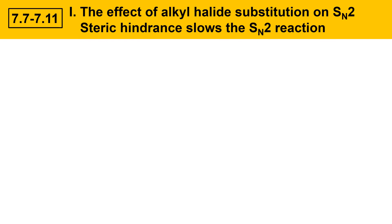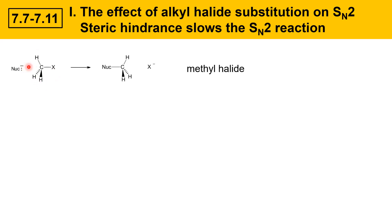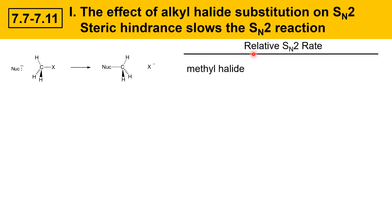We'll see this through a series of examples. The first involves a methyl halide: the carbon is bonded to the X group with no R groups attached. The nucleophile has a relatively unhindered path to the carbon, and the substitution product forms quite easily. The relative SN2 reaction rate for a methyl halide is given a value of 1,000 — that's fast.